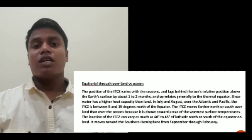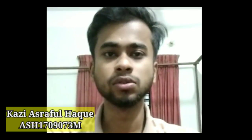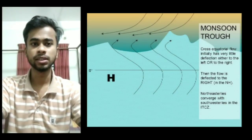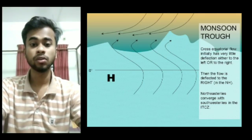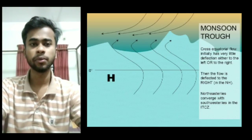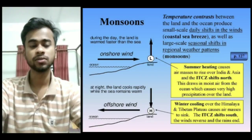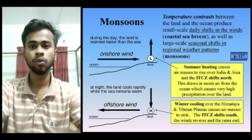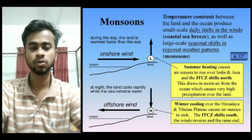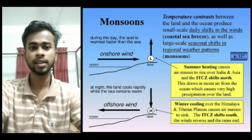The location of the ITCZ can vary as much as 40 to 45 degrees of latitude over land. It moves toward the Southern Hemisphere from September through February. In July, the ITCZ is located around latitude 20 to 25 degrees north and is sometimes called the monsoon trough. It encourages the development of thermal lows over north and northwest regions. The movement of the ITCZ is not only important for wind circulation but also for bringing moist currents, as wind flows from high to low pressure zones as the ITCZ oscillates northward and southward.